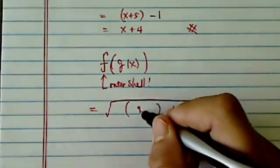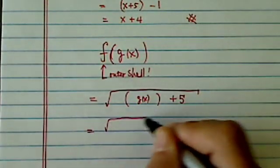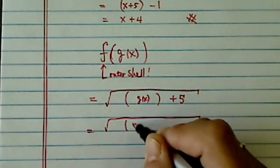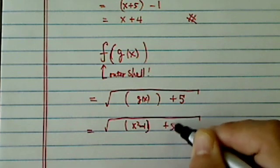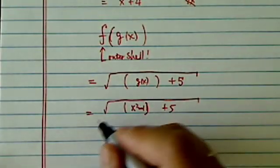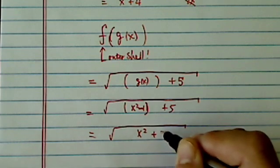What do you give me then? I'll give you g of x, and I'm going to put it in there. g of x is x squared minus 1 plus 5, and then I just simplify from there. It becomes x squared plus 4.